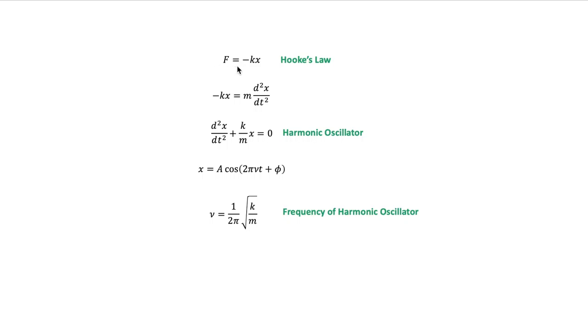We have F = -kX and this relationship is known as Hooke's law. Using Newton's second law, we get the equation for the harmonic oscillator.